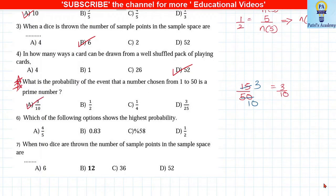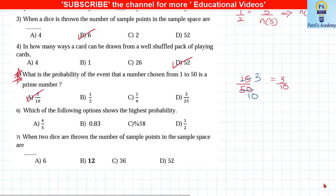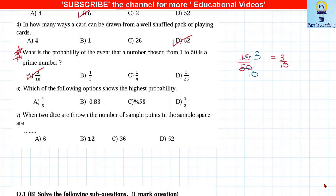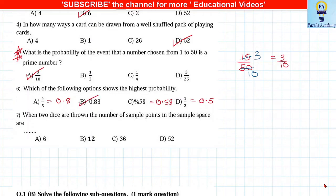Which of the following shows the highest probability? Convert everything to decimal: 4/5 = 0.8, 0.83, 58% = 0.58, and 1/2 = 0.5. After converting, 0.83 is the biggest. Always convert to decimal first, then decide which is largest.